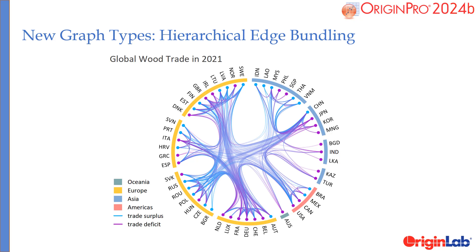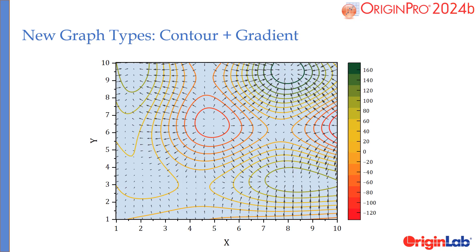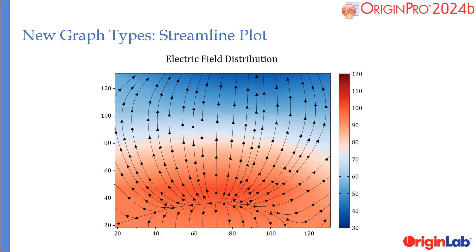Several new graph types have been added: Hierarchical Edge Bundling, 3D XYZ Floating Bar, Contour Gradient Plot, and Streamline Plot.